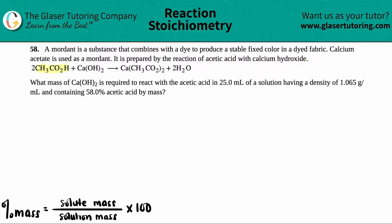Here are your two reactants: one has to be acetic acid and the other has to be calcium hydroxide. This is the one that has calcium in it — calcium hydroxide is one of your strong bases, which you should memorize. And this is the acetic acid.